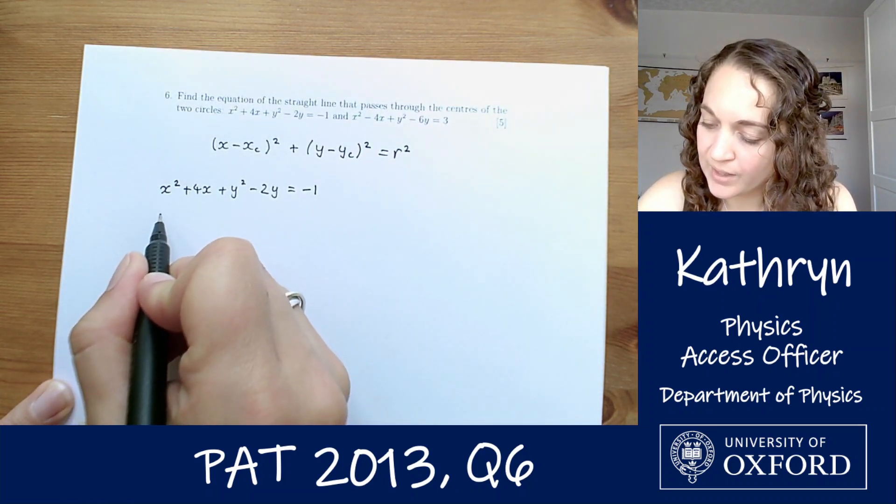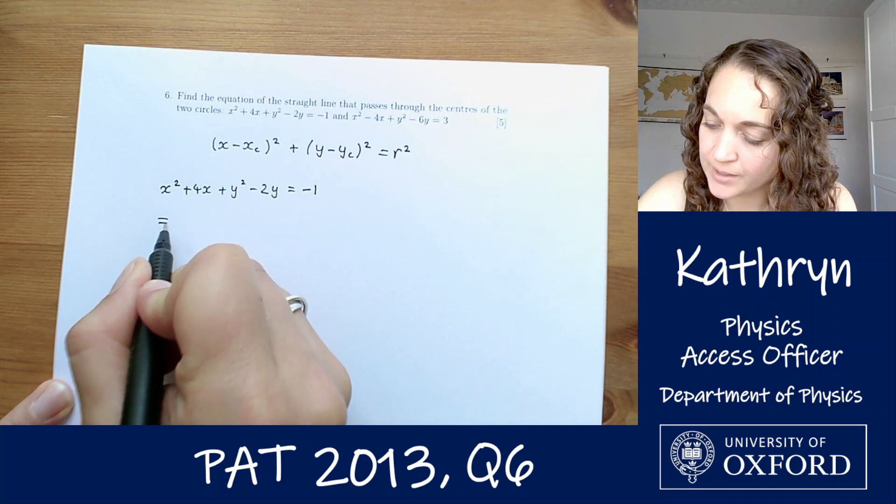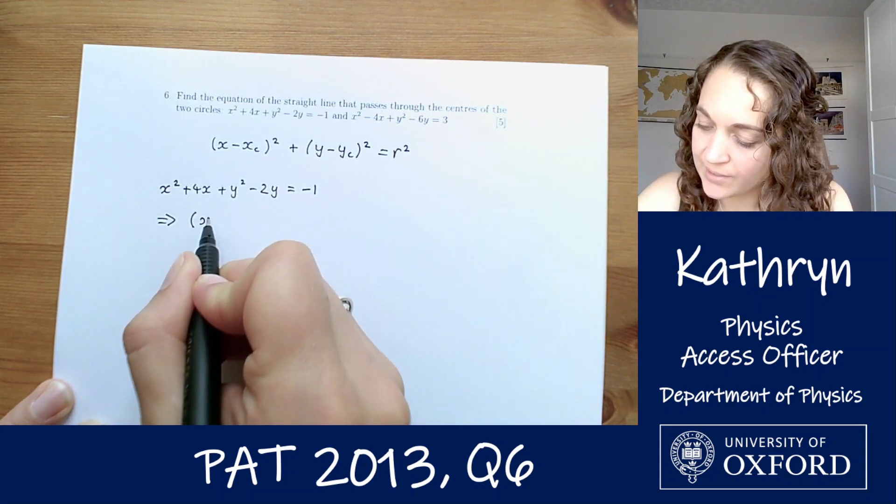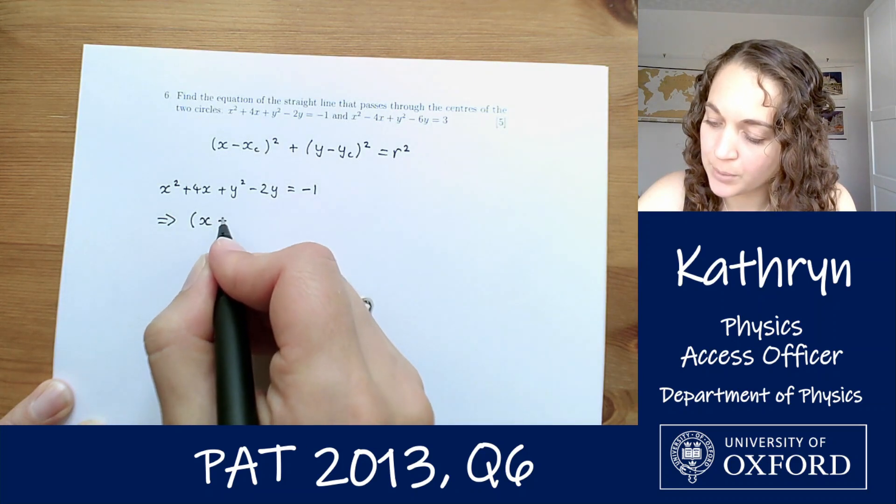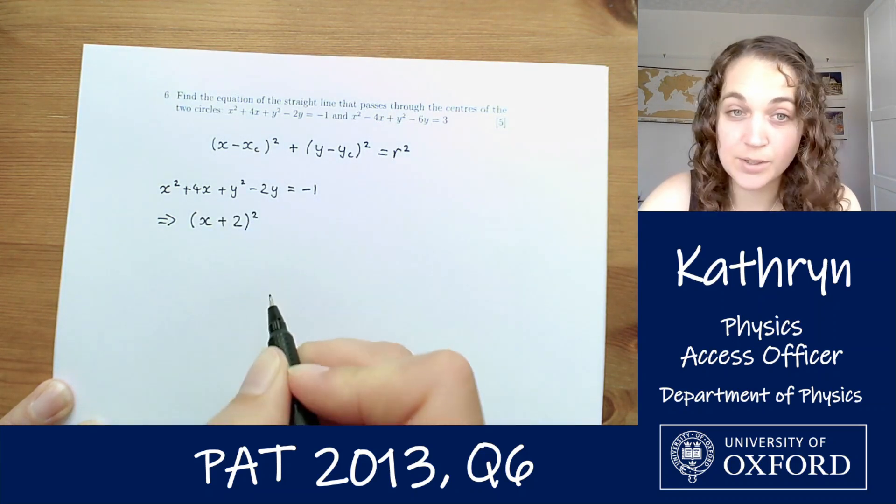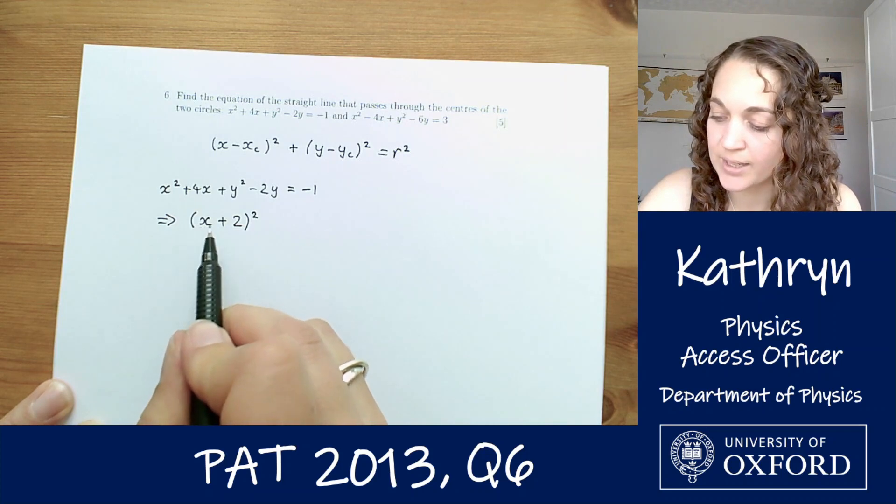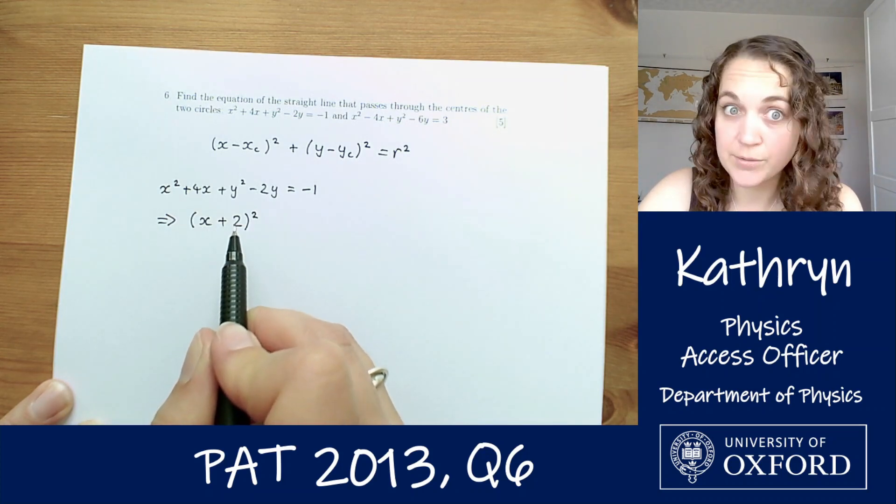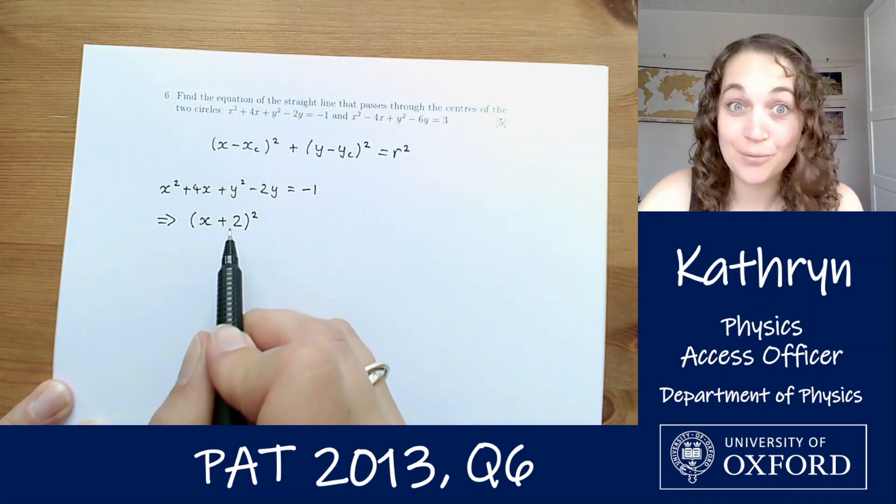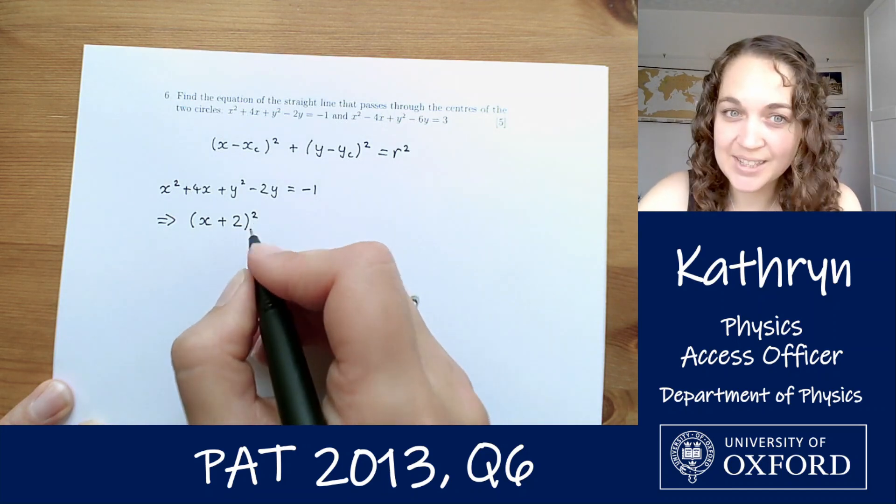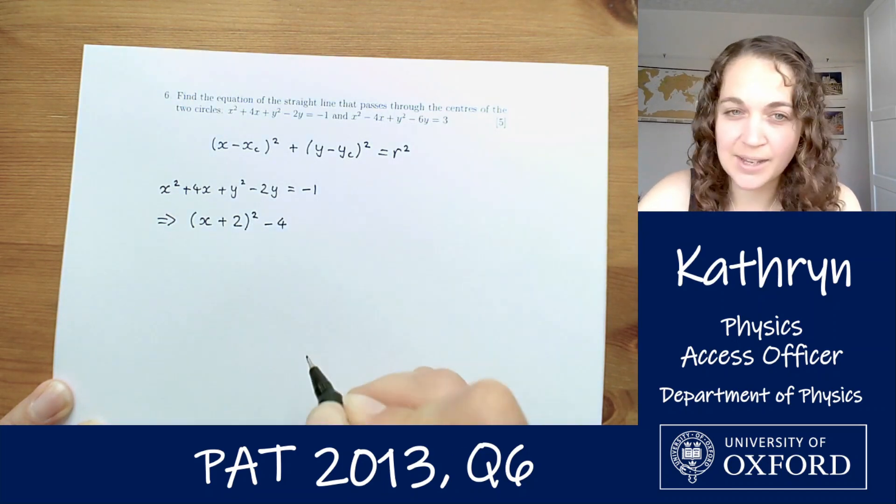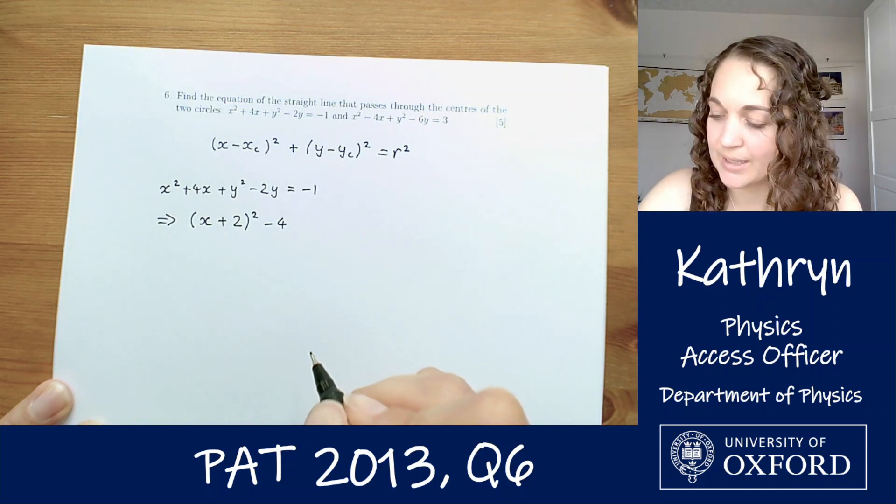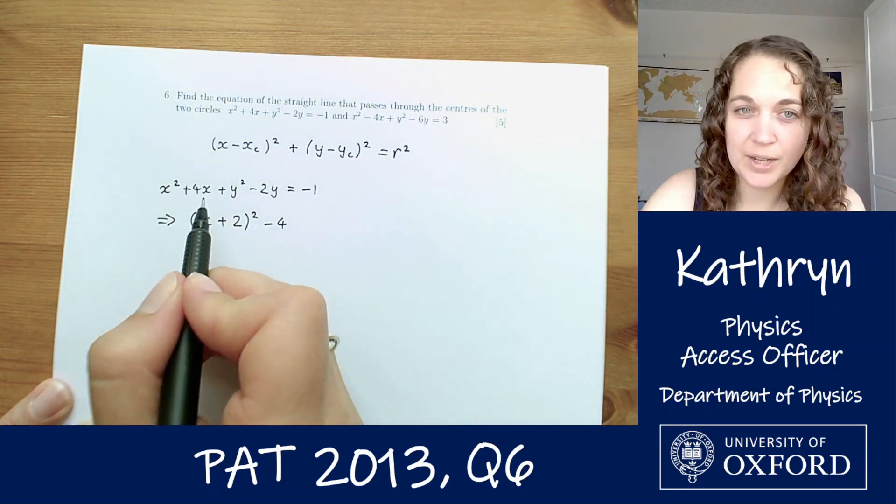So what's that going to give us? We're going to have an x in our first bracket and then to get the 4x we're going to need a plus 2 because if we multiply out x plus 2 squared that's going to give us x squared plus 4x plus 4. So we're going to need to subtract a 4 from there to make sure it all balances out to make sure we've properly completed our square. So that will give us the x part at the beginning.